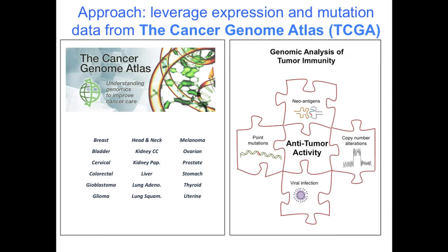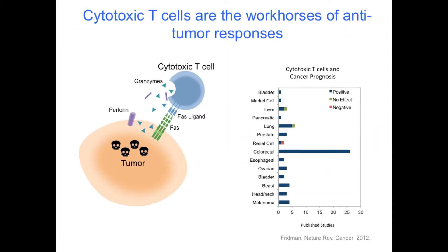We went to the TCGA dataset — over 10,000 tumors that had been sequenced and RNA-sequenced — and asked could we use those to start to analyze the immune response. Because TCGA took whole biopsies of tumors and profiled them, the immune system was in there. We decided to focus on cytotoxic T-cells because they are able to detect tumors by detecting antigens presented on the surface of tumors, and then kill those tumors by releasing perforin, which puts a hole in the target cell, and then a granzyme that cuts the proteins inside and kills it. As published studies have shown, there is a good prognosis with increased numbers of cytotoxic T-cells in your tumor.